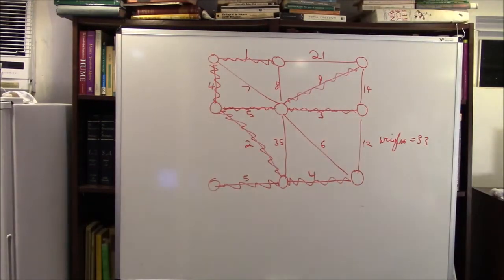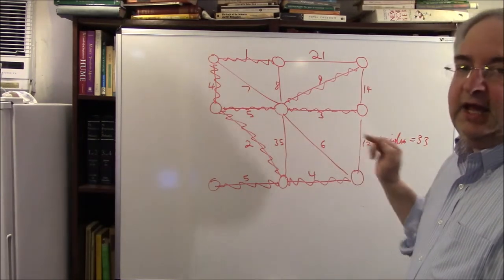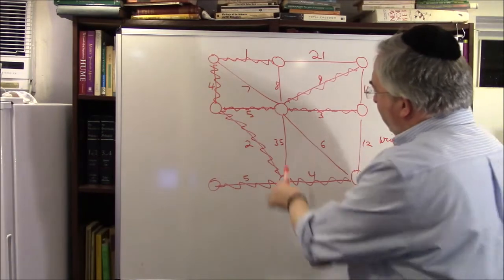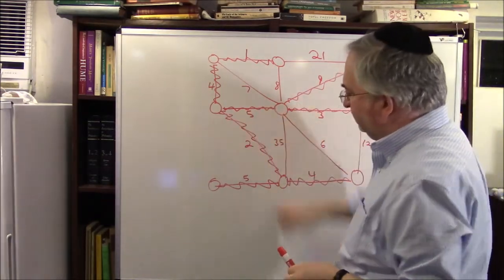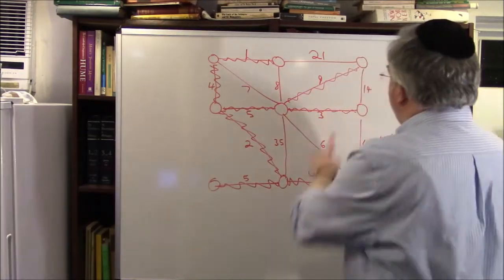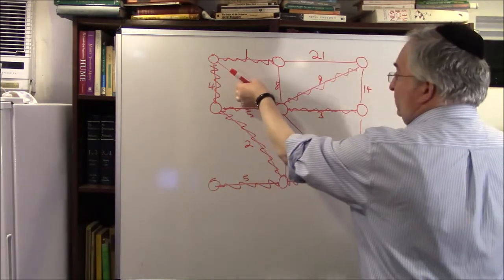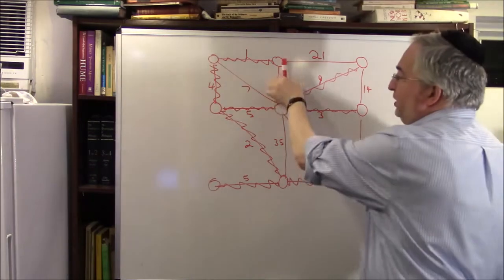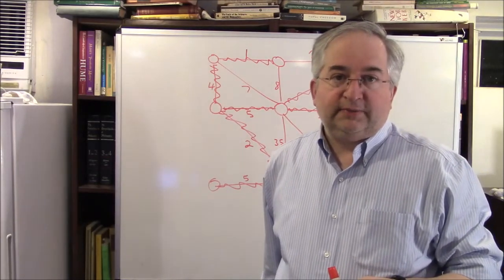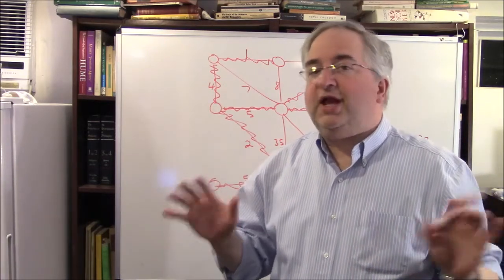One thing I want to point out: if you add any edge here you will get a cycle. If I add this edge I can go around like that; if I add this edge I can go around like this — and so on for every possible edge. Any edge you add in would make a cycle. So you don't want to make any cycles. It's a tree where you add and add until you can't add any more.